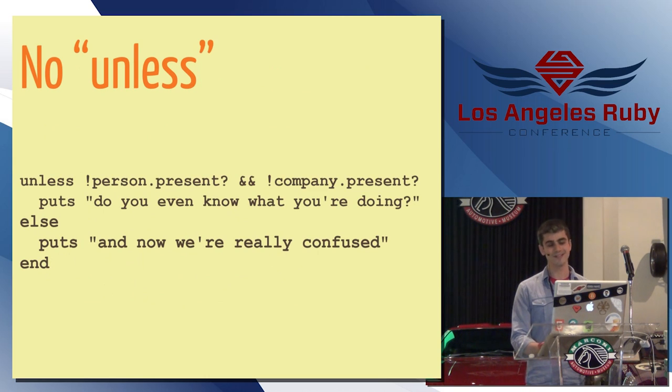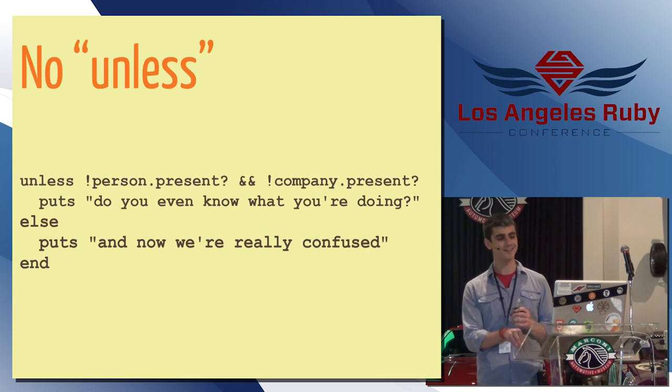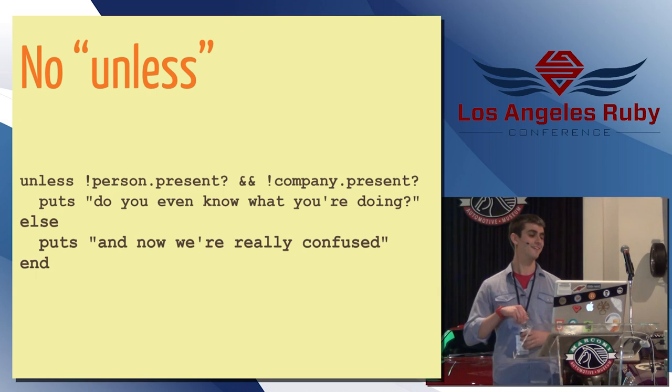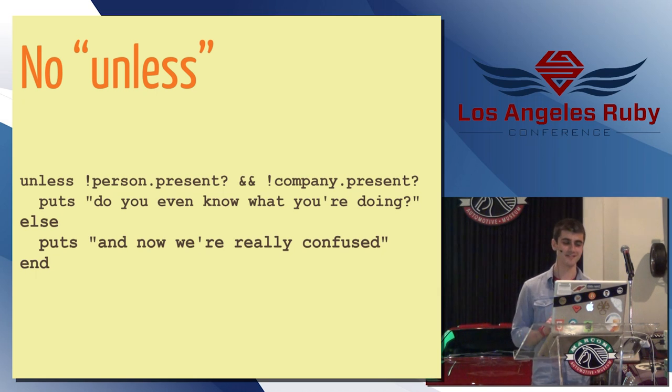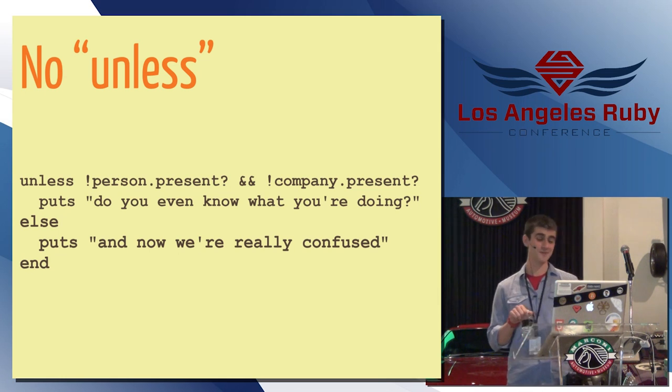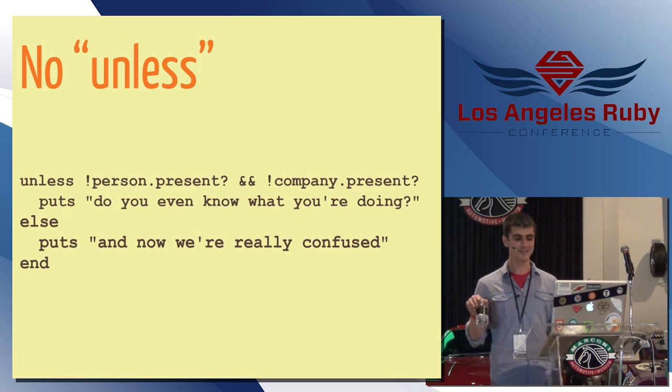Python has no unless, which I am very excited about. I loved unless when I first learned Ruby, now I hate it. Here's a great example from the 37signals blog. Unless not person.present and not company.present, do you even know what you're doing? And then if you add an else to something like that, it's just, it's horribly confusing.